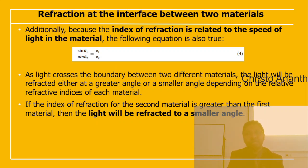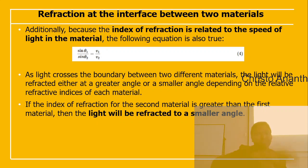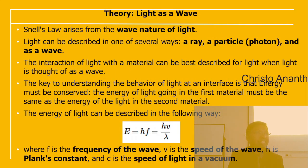When light crosses the boundary between two different materials, it is refracted to a greater or smaller angle depending on the relative refractive indices. If the refractive index of the second material is greater than the first, light is refracted to a smaller angle.